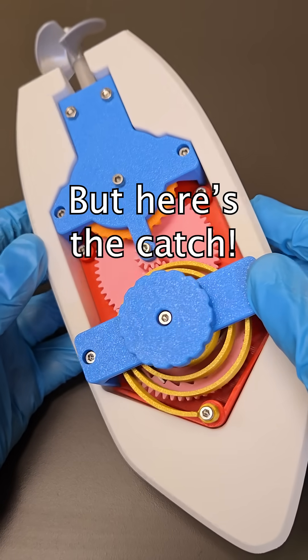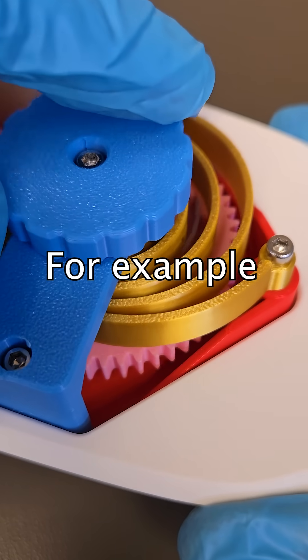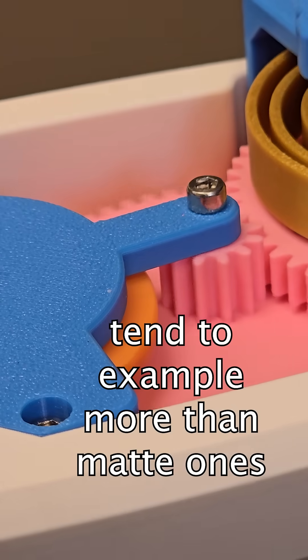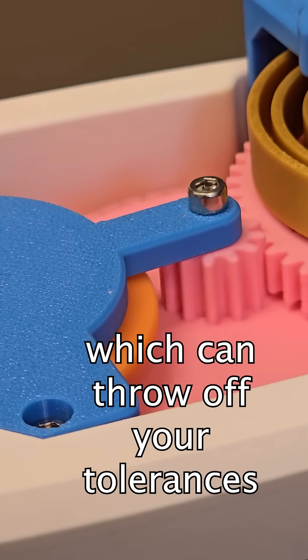But here's the catch. The filament type matters. For example, shiny PLA silk filaments tend to expand more than matte ones, which can throw off your tolerances.